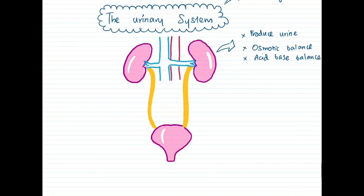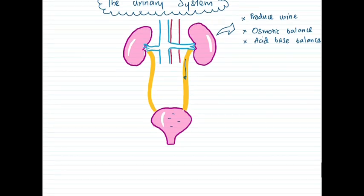The ureter transfers whatever is received from the kidneys towards the bladder, so it basically has a transport function. The urinary bladder contains the urine brought from the ureters and temporarily stores it. The urethra provides the pathway to excrete the urine from the bladder outside of the body.